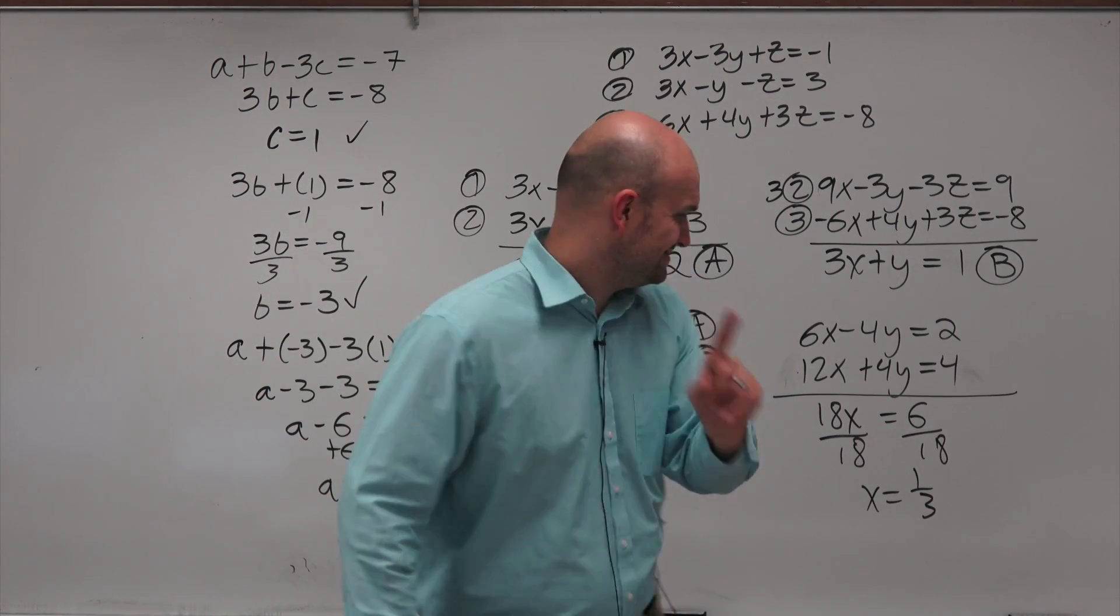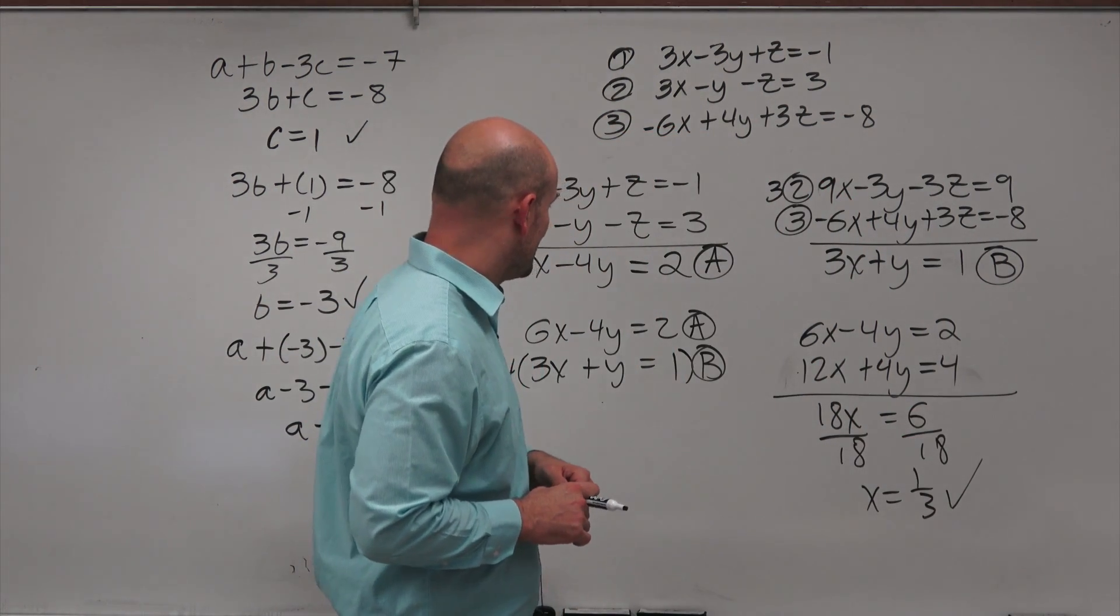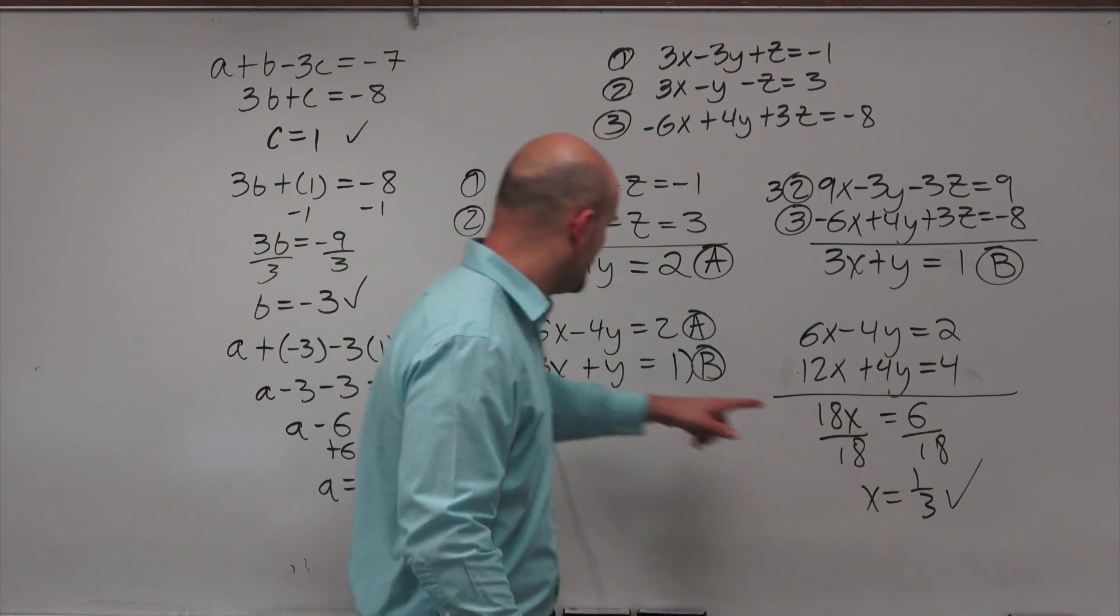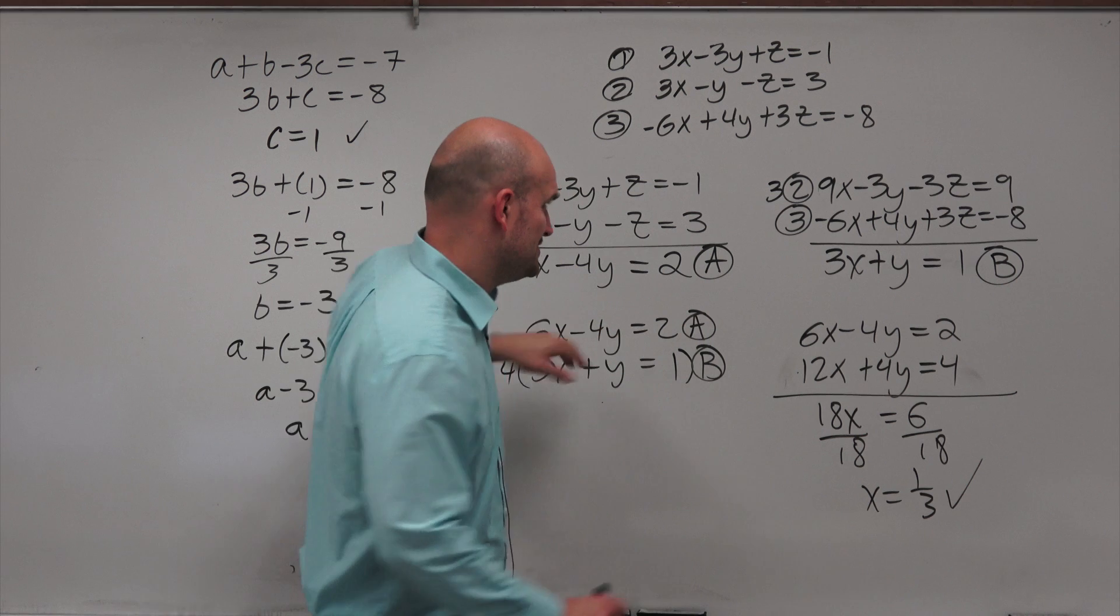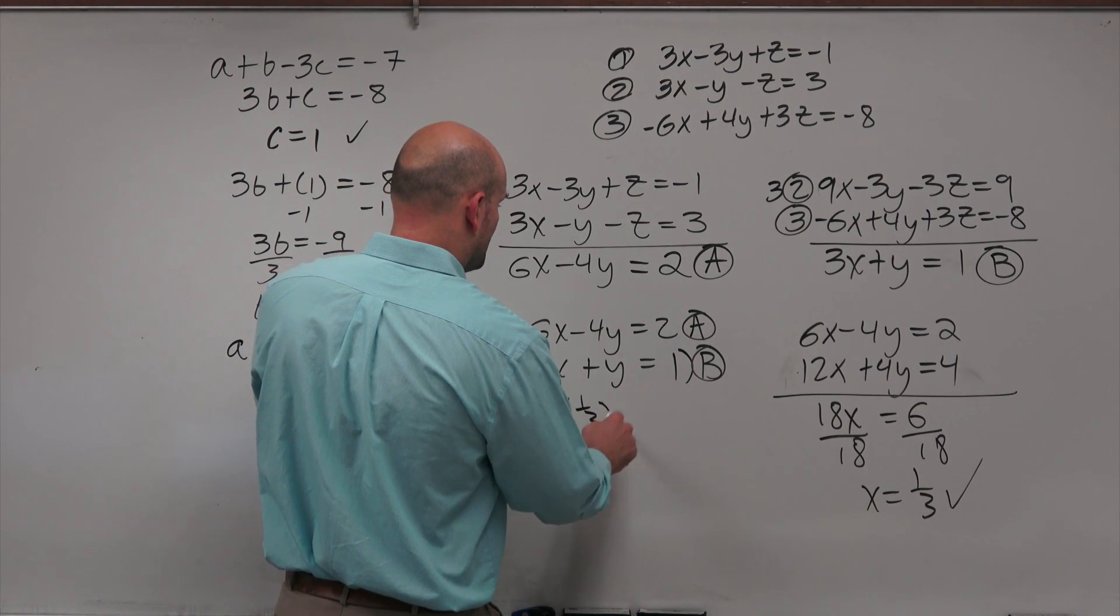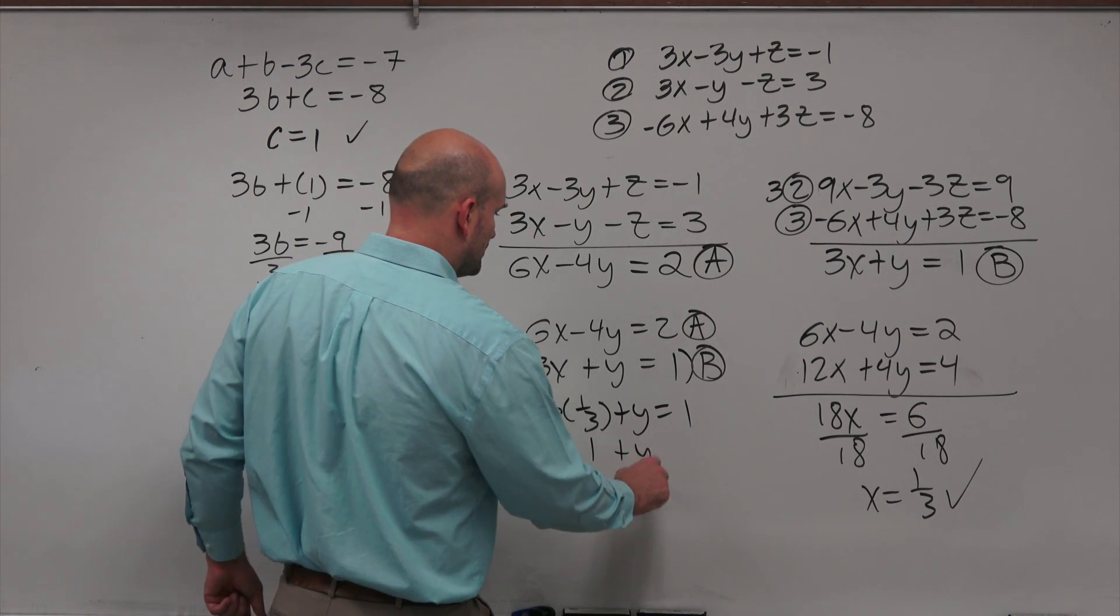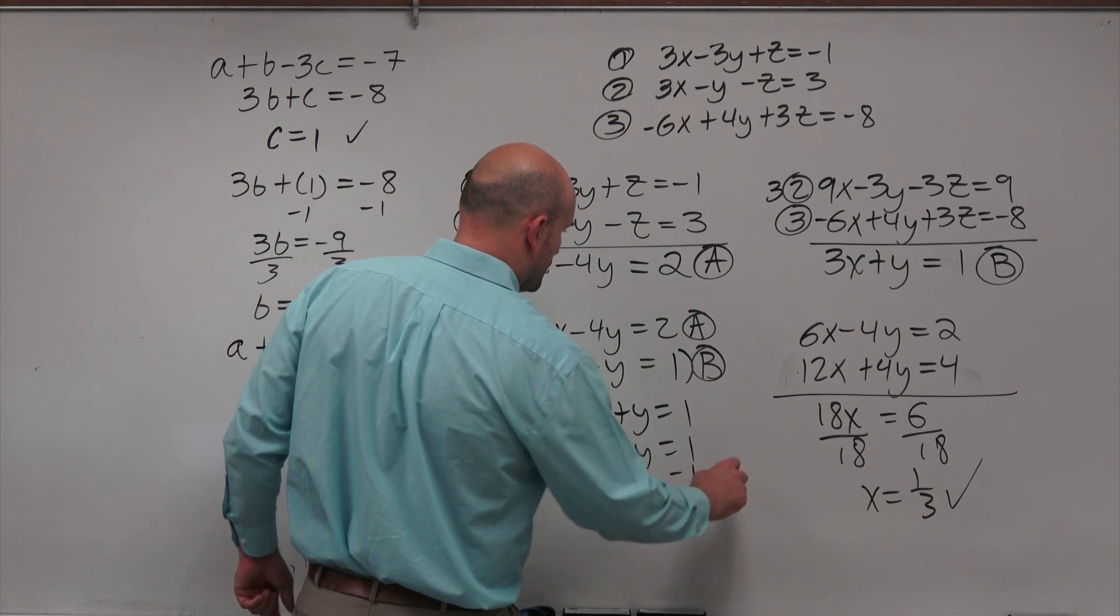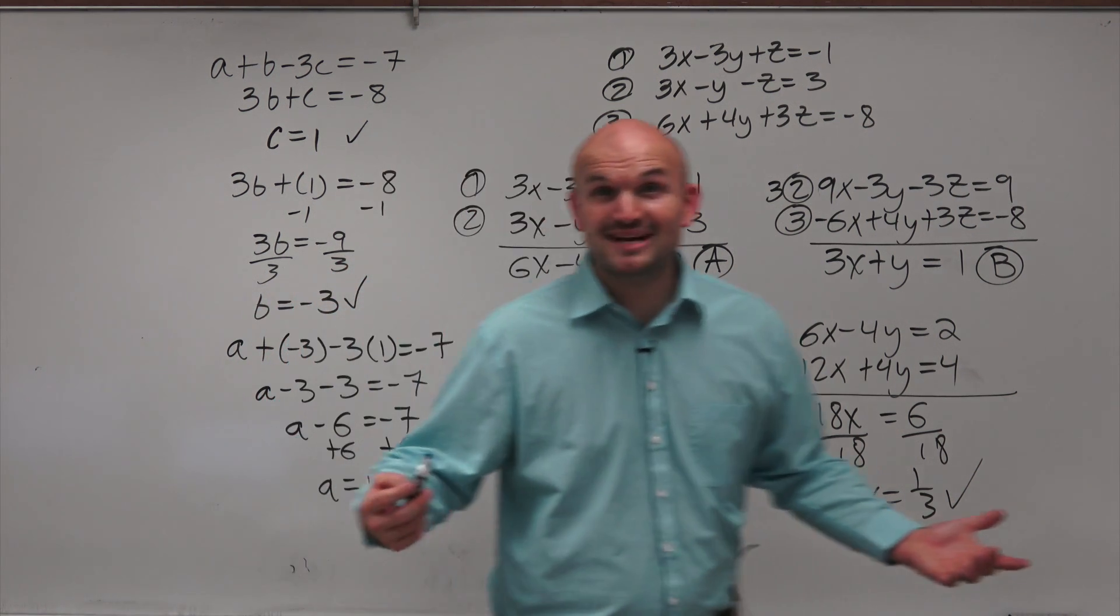So we finally got one. We got one. So we found our value of x. Now again, to find y, we need to plug this into one of our a or b's. It doesn't really matter which one. I think b is probably easier. So let's plug it in there. So I do 3 times 1 third plus y equals 1. Well, 3 times 1 third is 1. Plus y equals 1. So minus 1, minus 1, y is going to equal 0. Voila. Now we got 2.